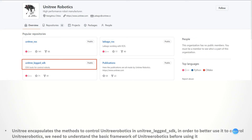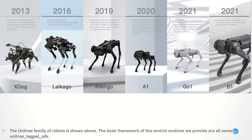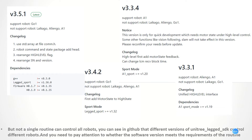Unitree writes the methods to control Unitree robot dogs in Unitree Legged SDK. In order to better use it to control our robot dogs, we need to understand the basic framework of the Unitree robot dogs before we use it. We can see these are amongst all our robots. The basic framework of the controls we provide are all named Unitree Legged SDK, but not a single routine can control all robots. You can see in GitHub that different versions of Unitree Legged SDK control different robots.